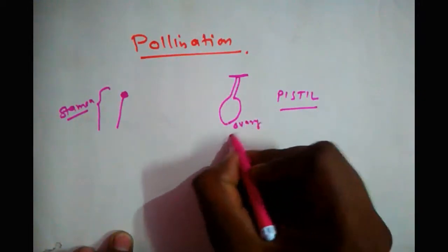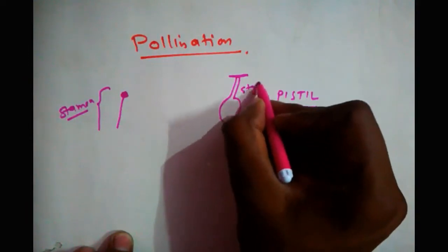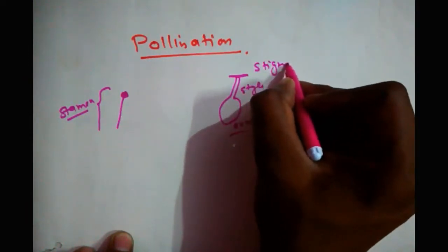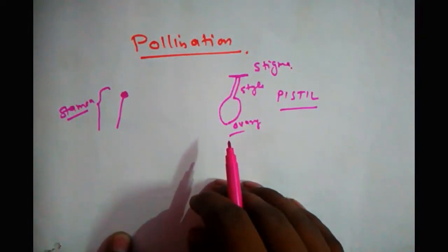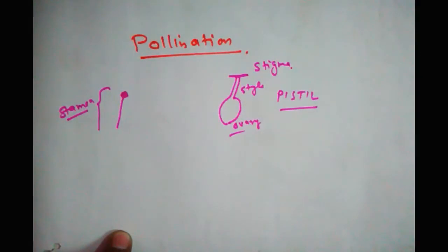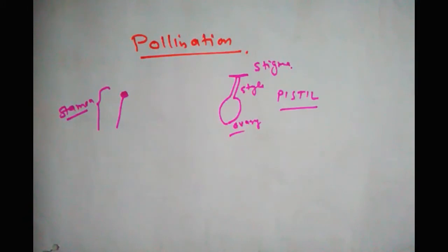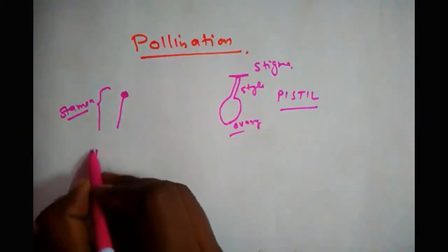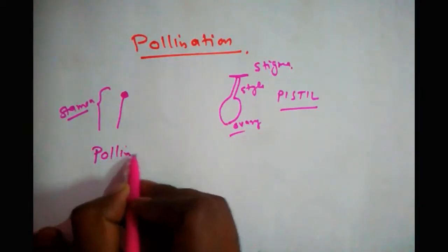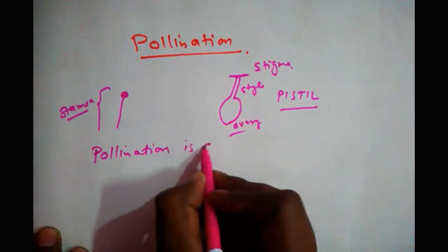The female part of the plant is known as the pistil. I have told you about the various three parts: stigma, style, and ovary. For fertilization to take place, the male gametes are released to the female gametes — but how does that take place?